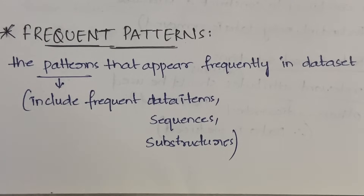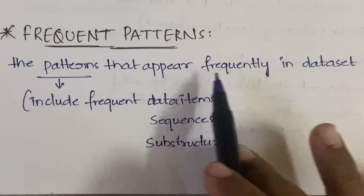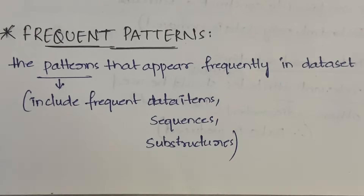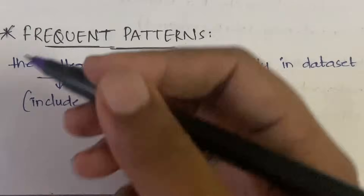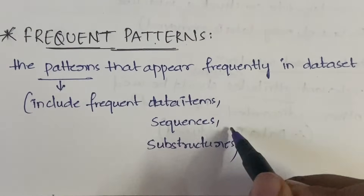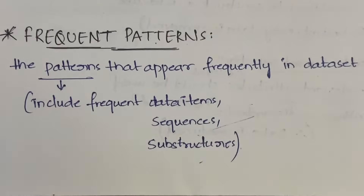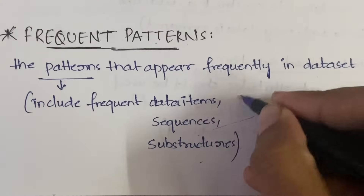Let's get into this video. What do you mean by frequent patterns? The word 'frequent' means something that happens most commonly. So, patterns that appear frequently in a dataset are called frequent patterns. These patterns include data items, subsequences, and substructures.